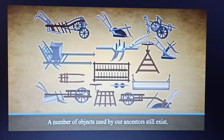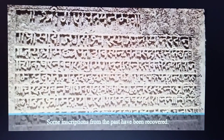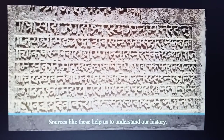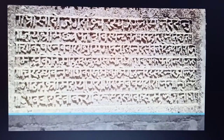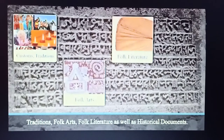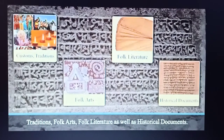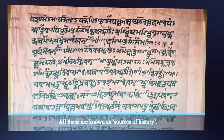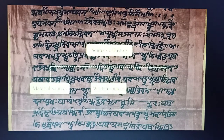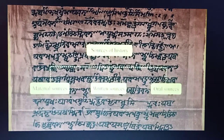A number of objects used by our ancestors still exist. Some inscriptions from the past have been recovered. Sources like these help us to understand our history. History can also be learnt through customs and traditions, folk arts, folk literature as well as historical documents. All these are known as sources of history. These are of three types: material sources, written sources and oral sources.